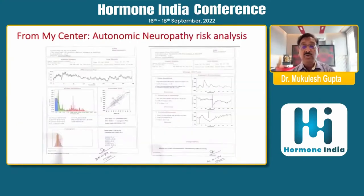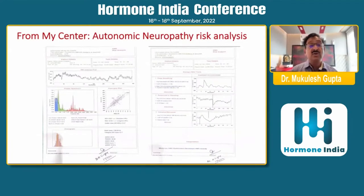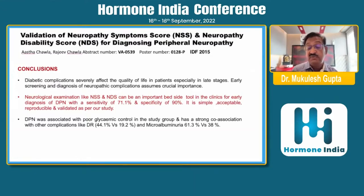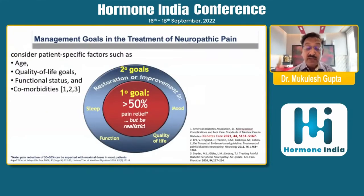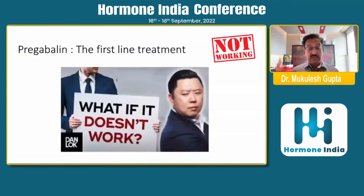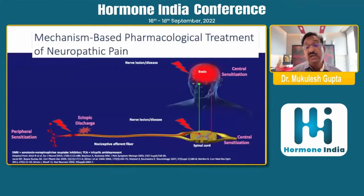For autonomic neuropathy, facilities are not available in many centers. What we need in day-to-day practice is the Neuropathic Symptom Score or Neuropathy Disability Score, which can be used very easily in clinics and have high sensitivity and specificity of nearly 90%. The management goals in painful diabetic neuropathy are to achieve at least 50% pain relief, while also addressing secondary goals like improving mood, sleep pattern, functionality, and overall quality of life. Today I'll discuss what lies beyond pregabalin.